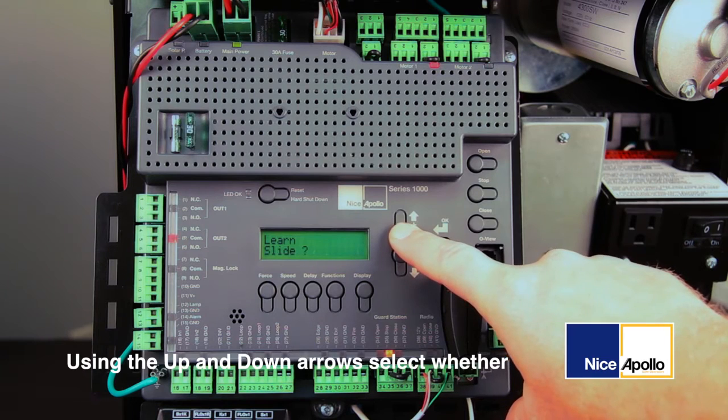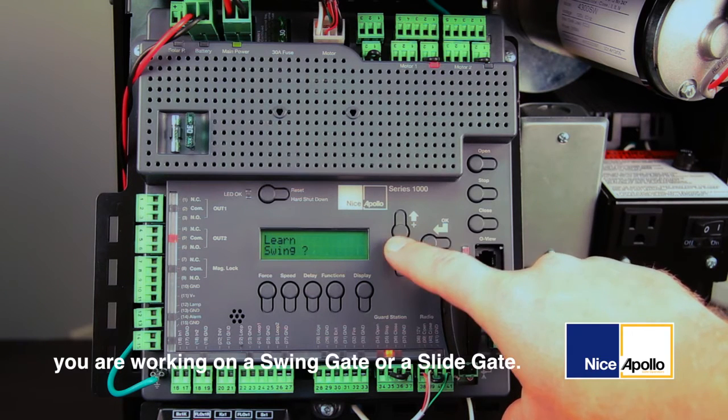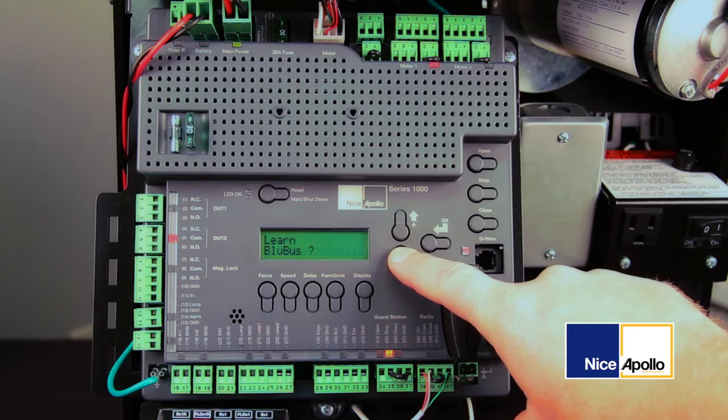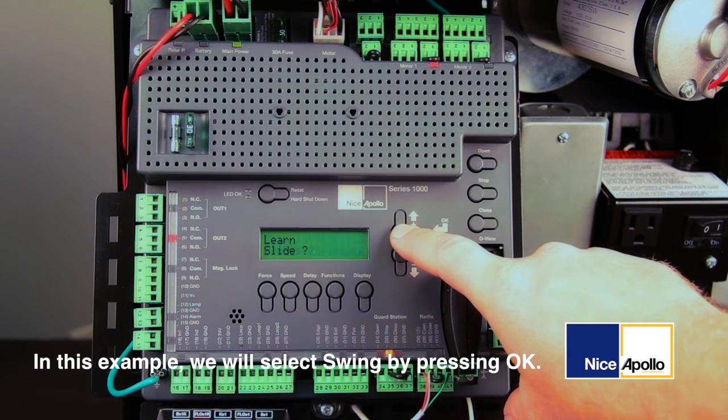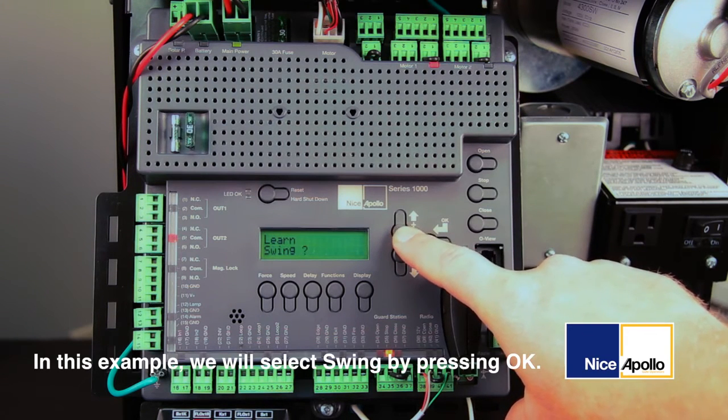Using the up and down arrows, select whether you're working on a swing gate or a slide gate. In this example, we will select swing by pressing OK.